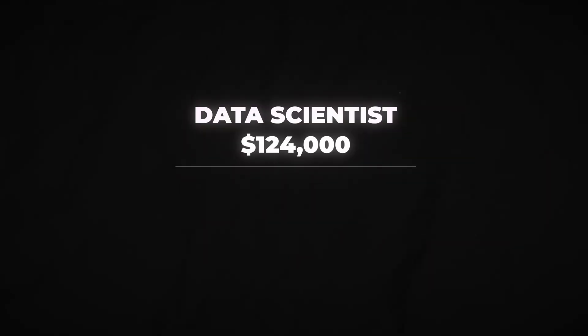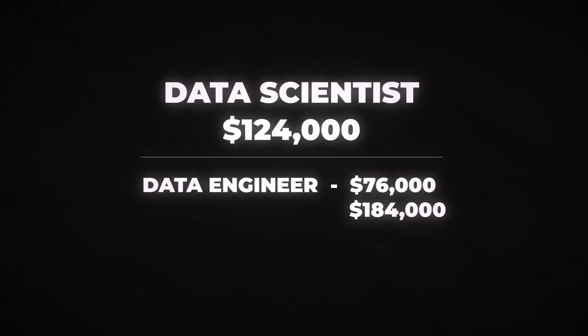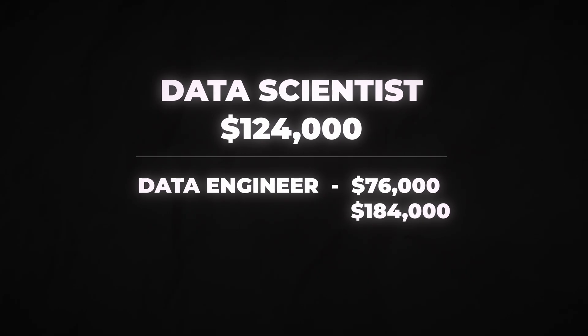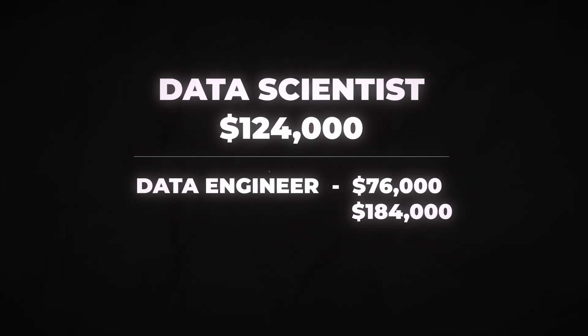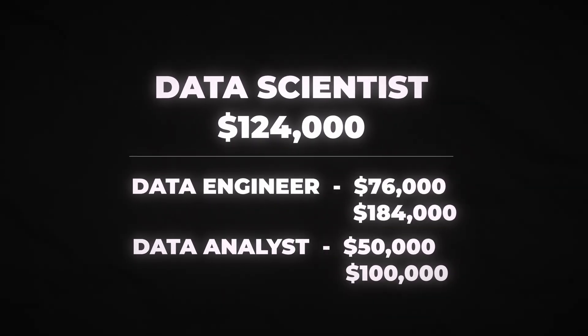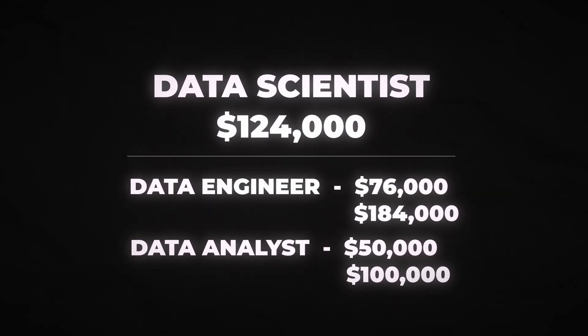Now let's talk about money. The pay of a data scientist in the US is around $124,000 per year, depending on your experience. This is a fantastic salary, and many other data roles pay great as well. A data engineer makes around $76,000 to $184,000 per year. A data analyst is around $50,000 to over $100,000 per year, and there are just so many different jobs you can do in data science.